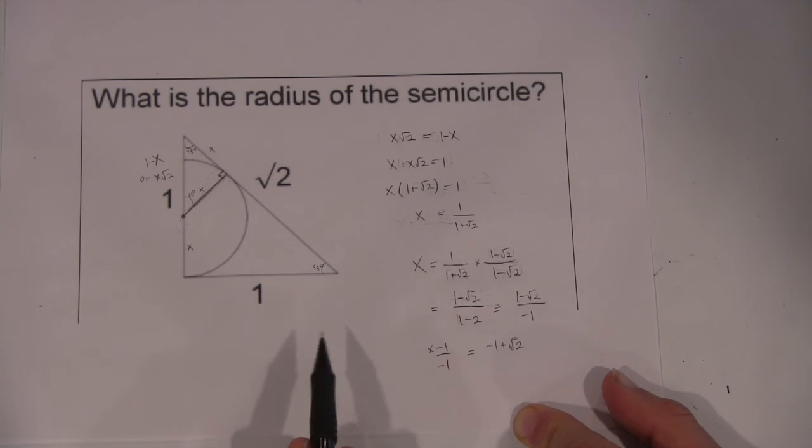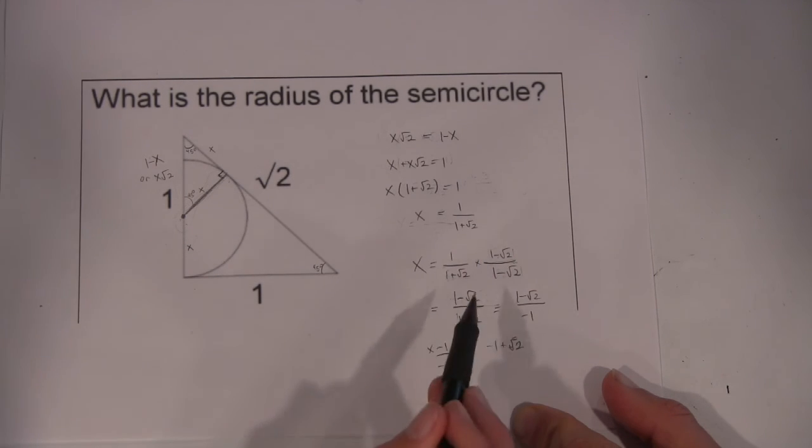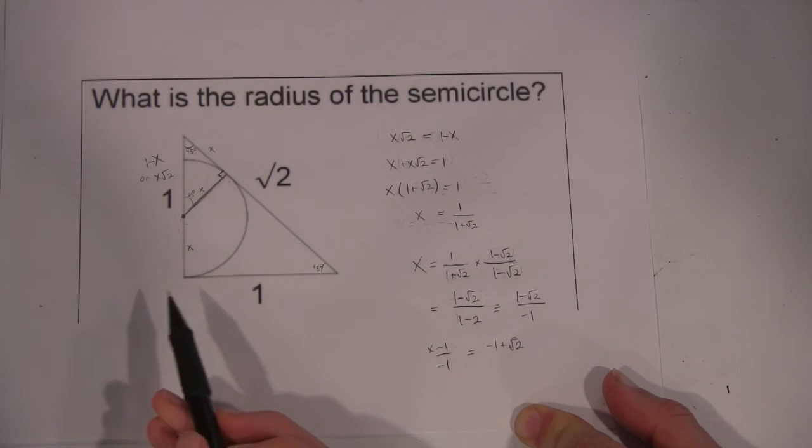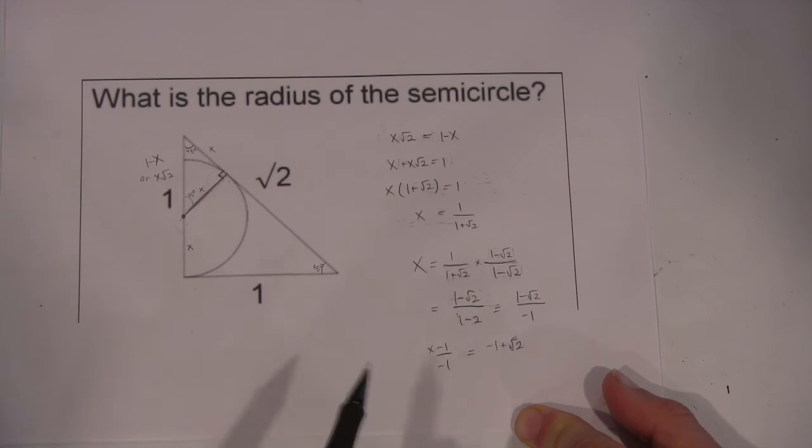we have to multiply by the conjugate, which is 1 minus √2. So we get 1 minus √2 over 1 minus 2, which is 1 minus √2 over minus 1, and then I just multiply it by minus 1 over minus 1 to get minus 1 plus √2, or √2 minus 1.